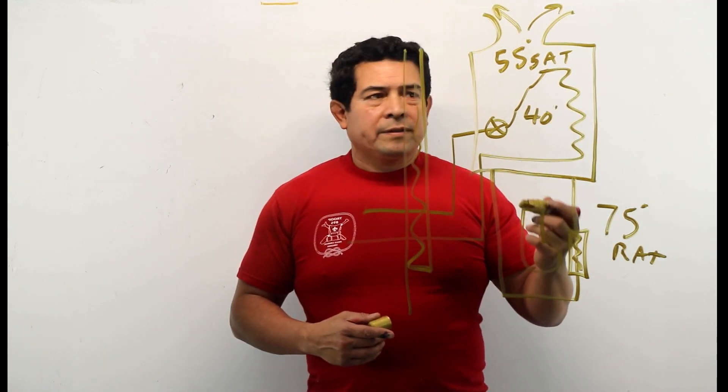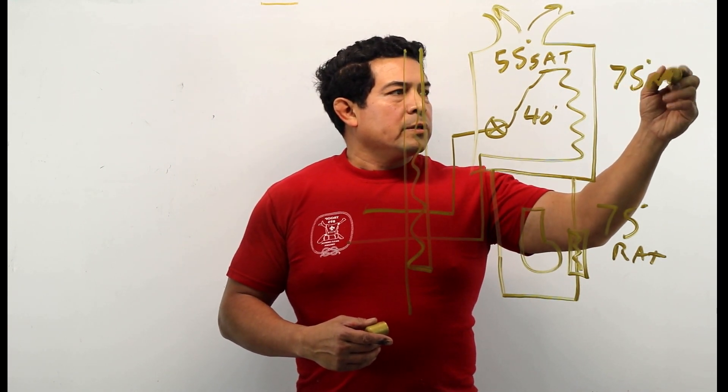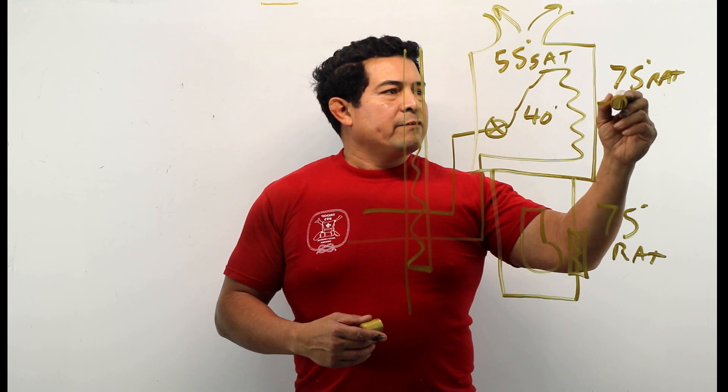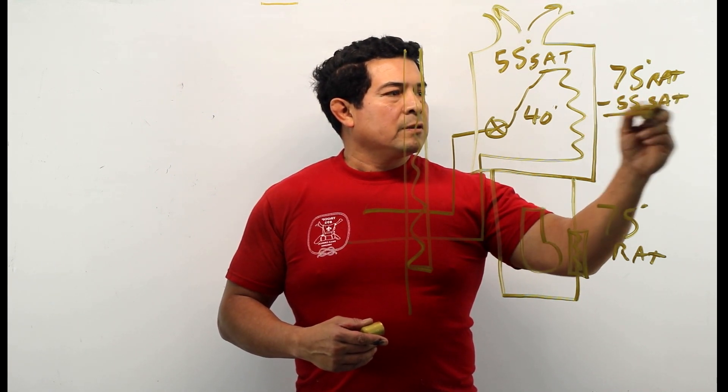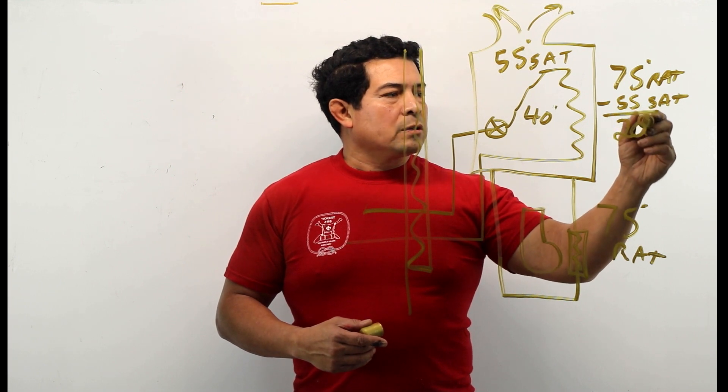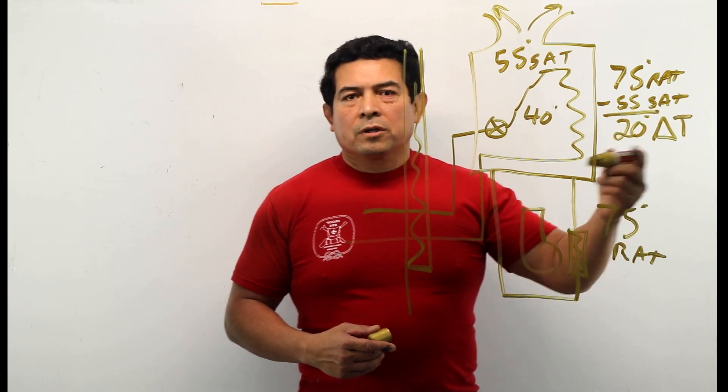So then what we have here is we have your 75 degrees return air temperature minus the 55 supply air temperature. That gives us a 20 degree delta T.